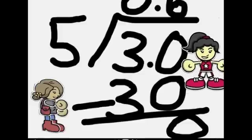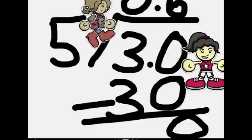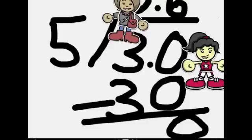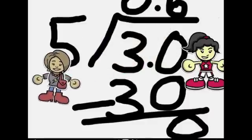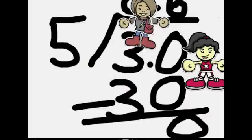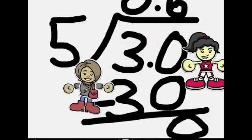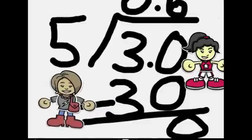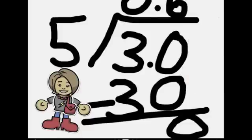Miss Morgan, thanks for helping me with this. No problem — this is easy. First, 5 can't go into 3, so you put a 0. Then, because there are no more numbers, you have to put a decimal point here and one here. Then put a 0 after — that makes 30. 5 goes into 30 six times, so 5 times 6 is 30. Put it under the first 30, subtract it, and the total is 0. So 5 goes into 3 — 0.6. Thanks Miss Morgan! Bye. Bye.